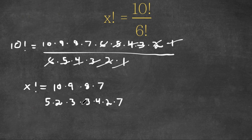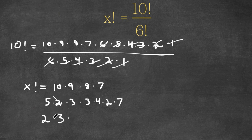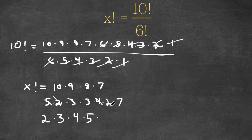Now we want to find all the numbers from 2 going up. We already have 2, so we can mark that. Now we have a 3, then we have a 4, then a 5. We don't actually have a 6 directly; however, 3 times 2 is 6, so those two cancel out, and finally we have a 7.